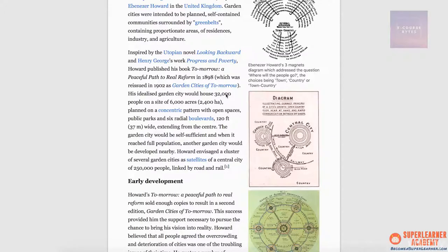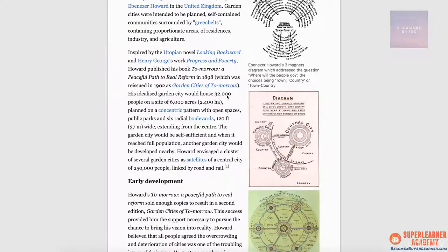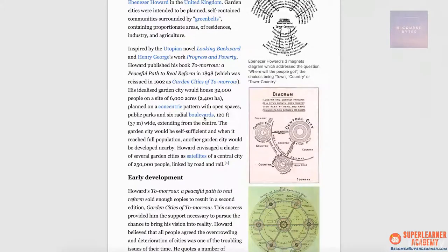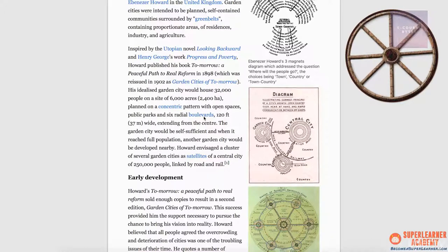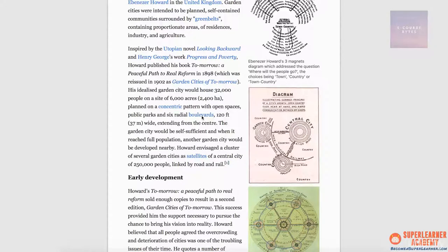For 32,000, the first thing that comes to mind is that it's roughly 32 gigabytes, and I picture an iPhone 3GS — a product that comes in a variant of 32 gigabytes. For 6,000, nothing particularly comes to mind very quickly. Six radial boulevards — I picture a hub and spoke, kind of like a wagon wheel, but with only six spokes. 'Radial' is the word I want to remember here. For 'boulevards,' I picture the planned community where I purchased my first home, which was called Boulevard.